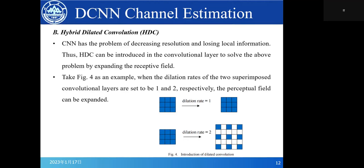Next, we introduce HDC. CNN has a problem of decreasing resolution and losing local information. Thus, HDC can be introduced into convolutional layer to solve the above problem by expanding the receptive field. Take Figure 4 as an example. When the dilation rates of two consecutive convolutional layers are set to be 1 and 2, the receptive field can be adversely expanded.